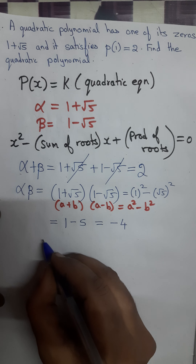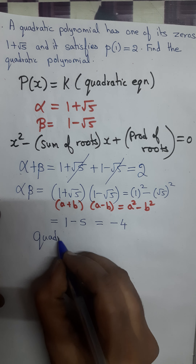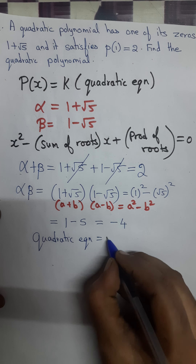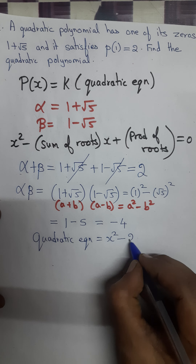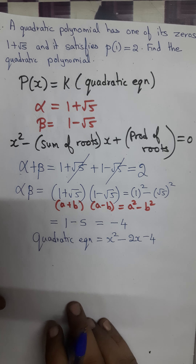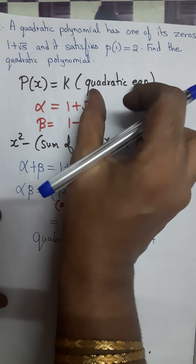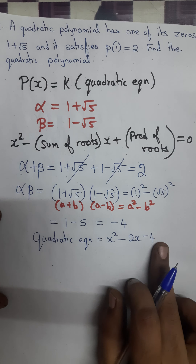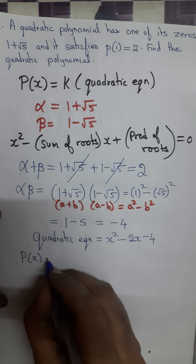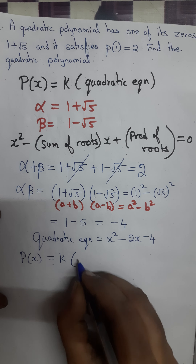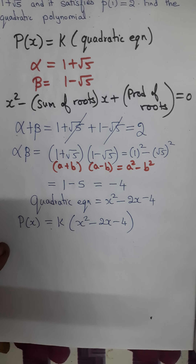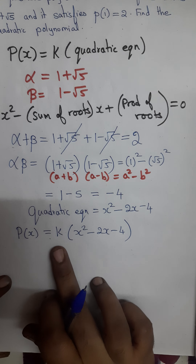Now substituting the sum and product of the roots into the formula, we get the quadratic equation x squared minus 2x minus 4. So p(x) is equal to k times (x squared minus 2x minus 4).